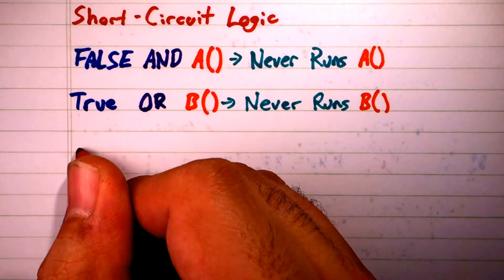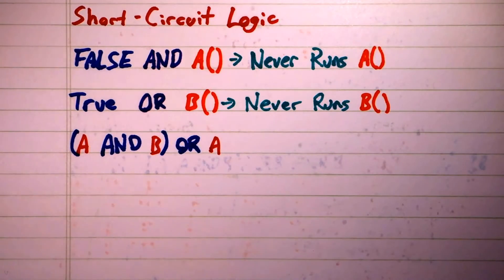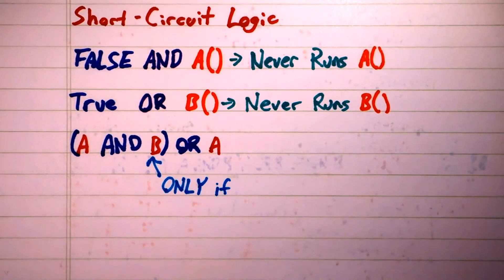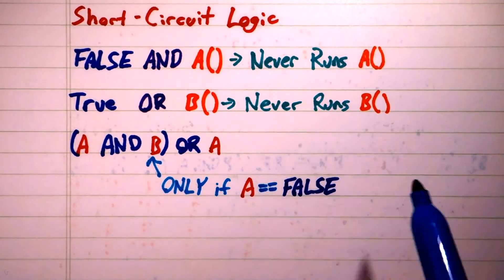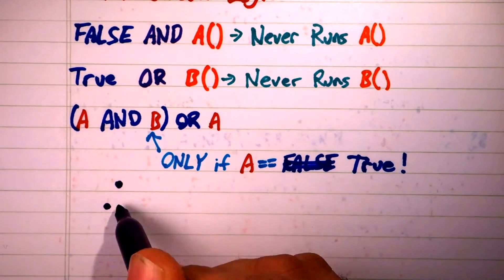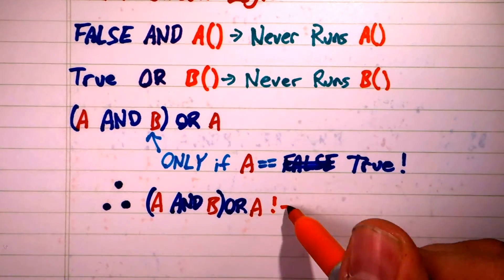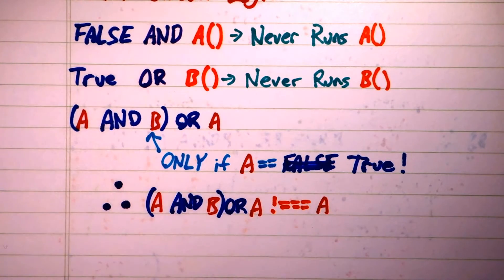So when we look back at A AND B OR A, we can see that B will only be evaluated if A is true. Therefore, reducing A AND B OR A to its logical equivalent A prevents the execution of B if A is true.